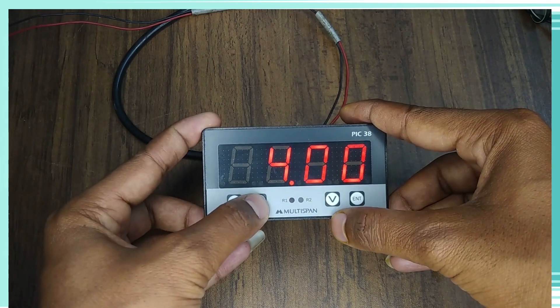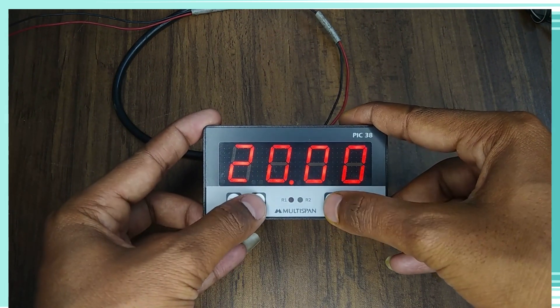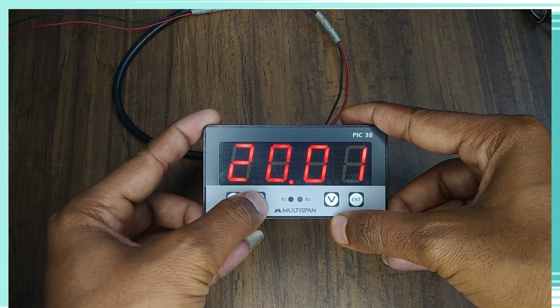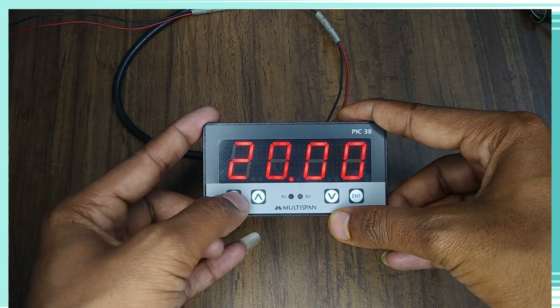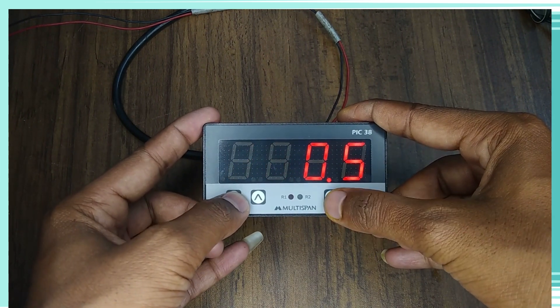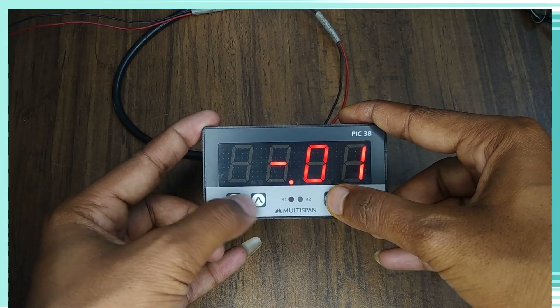After set press key, we can see the low range is minus 999 and for the high range, it will go up to 9999. In the filter time, we can see the range 0.1 seconds to 10 seconds.